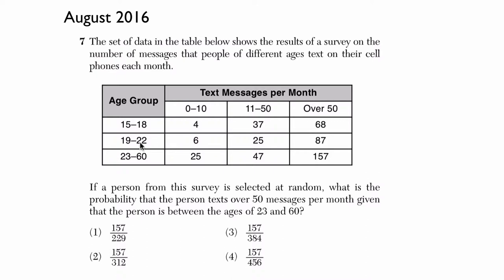So for example, people in the age group 19 through 22 — let's look at that — 25 of them text between 11 and 50 times per month. So let's see what they're going to ask us.